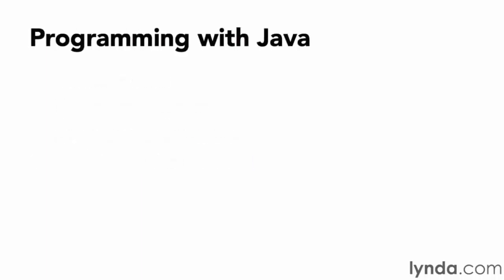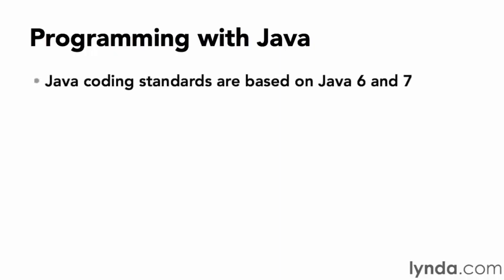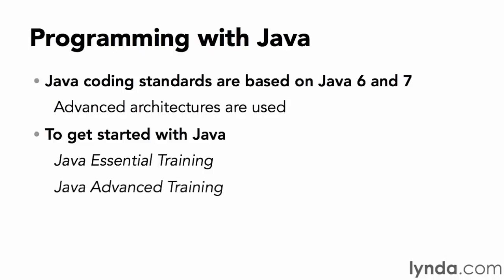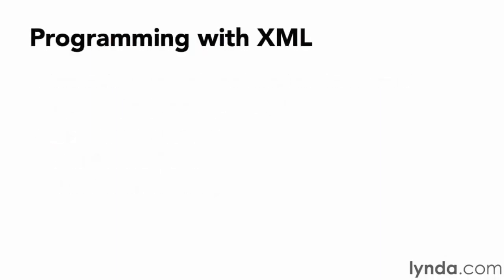The more you know about Java and XML, the more effective you can be as an Android developer. Android supports a custom version of Java — its syntax is primarily based on Java 6 with some syntax enhancements from Java 7. Advanced Java syntax is used, such as inner classes and anonymous classes. If you're brand new to Java, I recommend watching Java Essential Training and Java Advanced Training, which covers features new to Java 7 that are supported in the latest Android SDK.